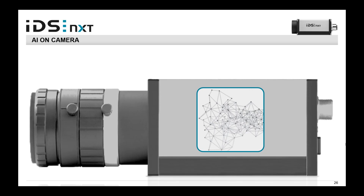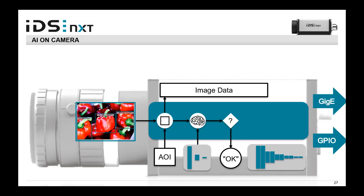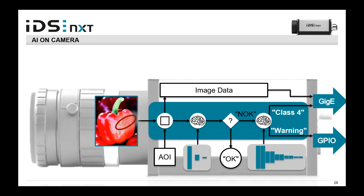Here's how this looks in practice with the bell pepper example. We analyze the bell peppers, take the area of interest, and provide image data. We can then pass it to a second network that tells us: the bell pepper in this AOI is okay, this one is not okay, or here is a warning — which we can communicate via Gigabit Ethernet or GPIOs directly into the factory environment. A complete data and decision flow without any PC.